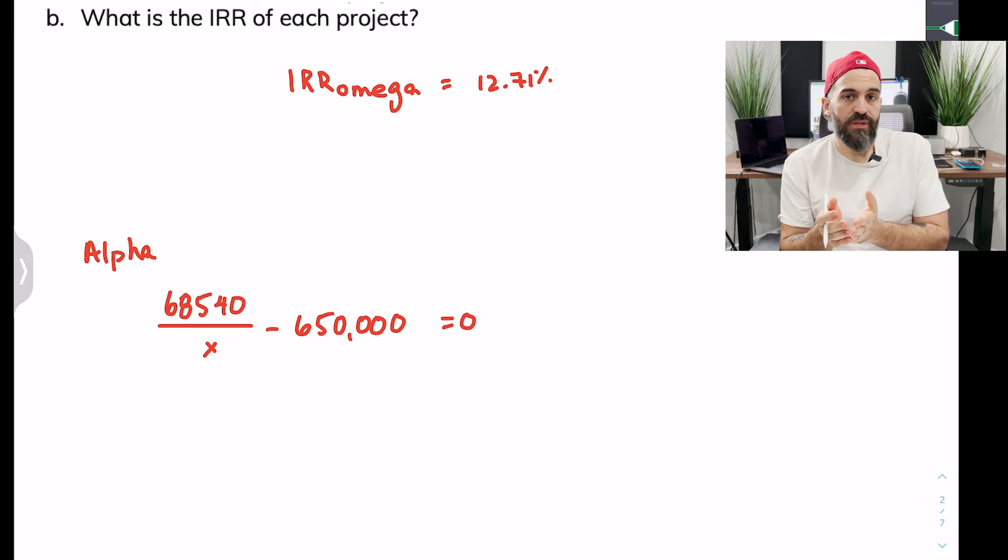$68,540 over x minus $650,000 equals zero. We're setting it to zero because if the net present value is zero we know that the discount rate is the internal rate of return. And then you can just solve this algebraically. You should get roughly 10.55%, so that would be the internal rate of return of Alpha.